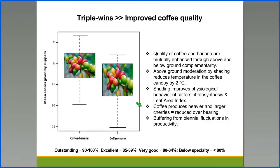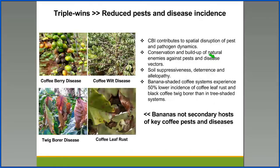Coffee intercropped with bananas improves coffee quality in that the quality of both coffee and banana are mutually enhanced through above-ground and below-ground complementarity. Above-ground moderation by shading reduces temperature in the coffee canopy by about 2 degrees. Shading also improves the physiological behavior of coffee with regards to photosynthesis and leaf area index. Coffee also produces heavier and larger cherries, which results in reduced overbearing.